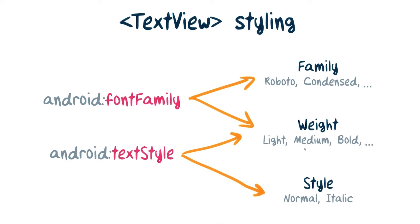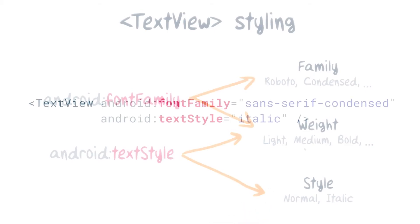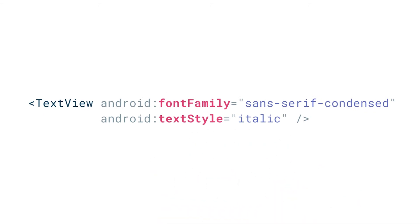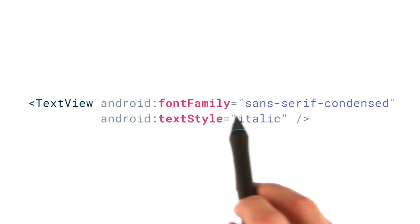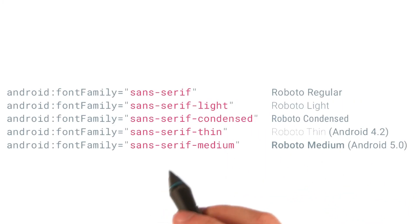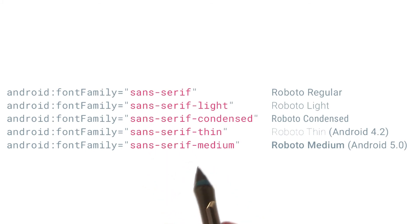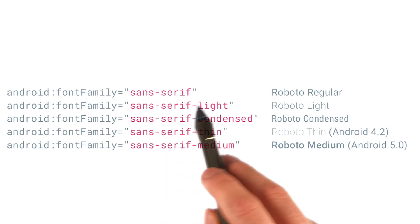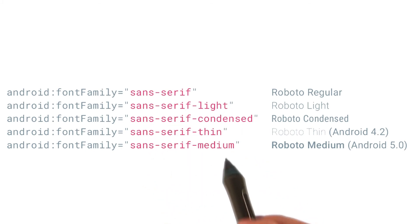Not every weight is available in every family. For example, as of this writing, Roboto condensed doesn't include a thin and a black weight. Here's some sample code for applying a font family and text style — here we're saying to use the condensed family, but italicized. And here are some other examples of values you can use for font family to set the font family or the weight, like thin, medium, and light.